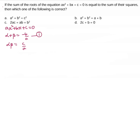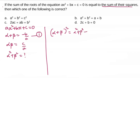Now, they have given that the sum of the roots is equal to the sum of their squares. We need to find α² + β². To find this, we take (α + β)² = α² + β² + 2αβ. Rearranging, α² + β² = (α + β)² - 2αβ. We will call this equation 2.